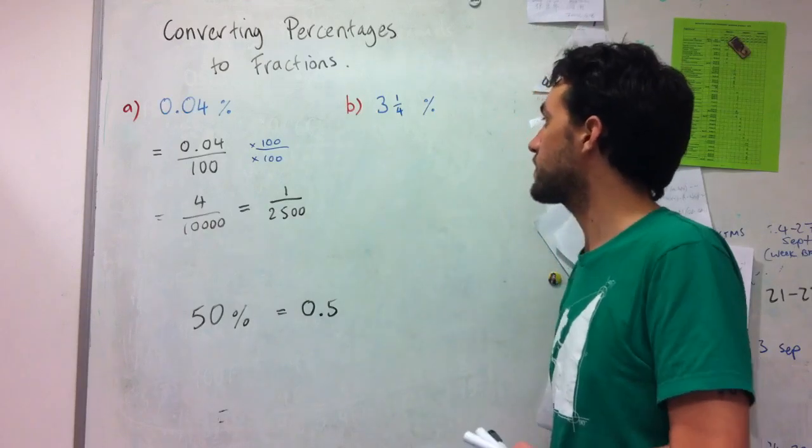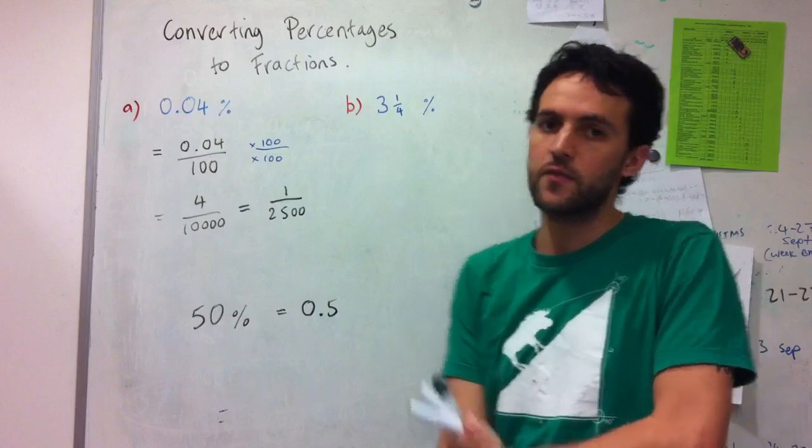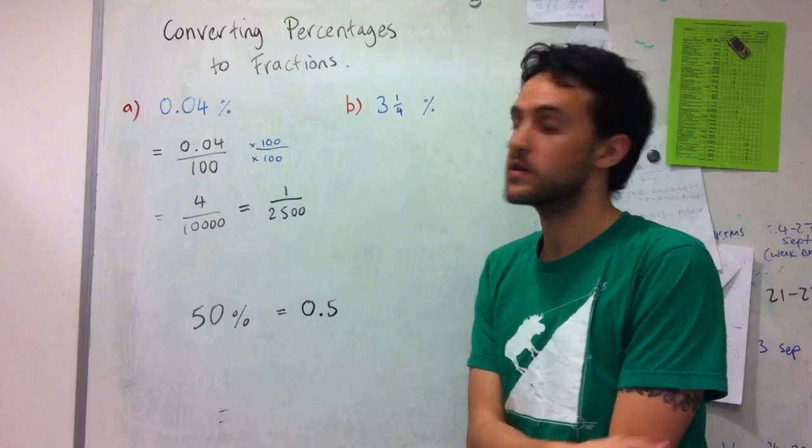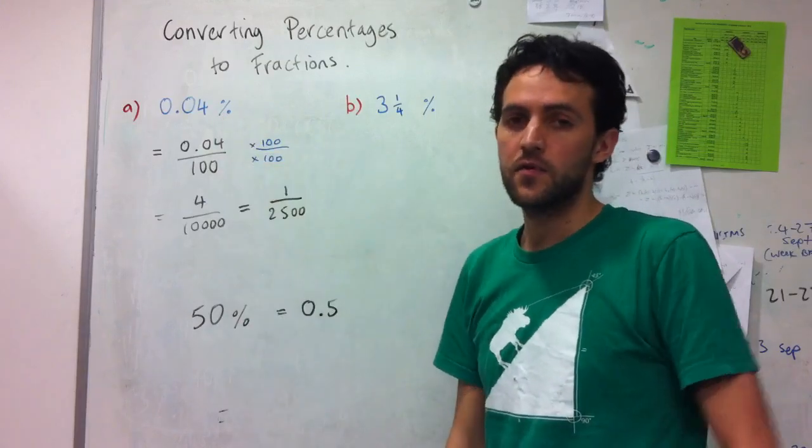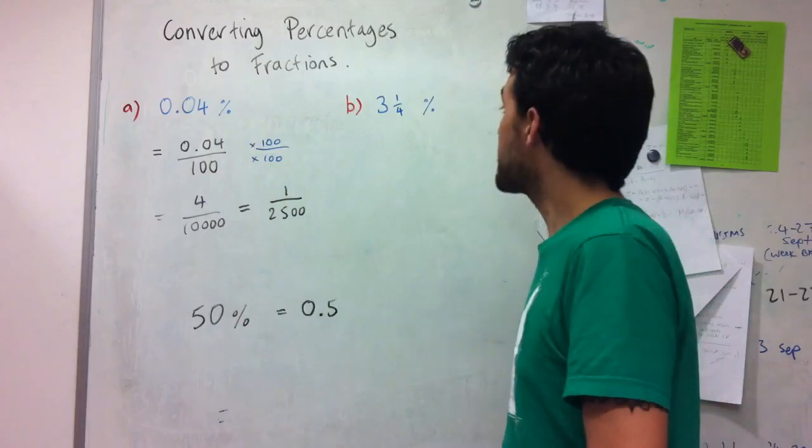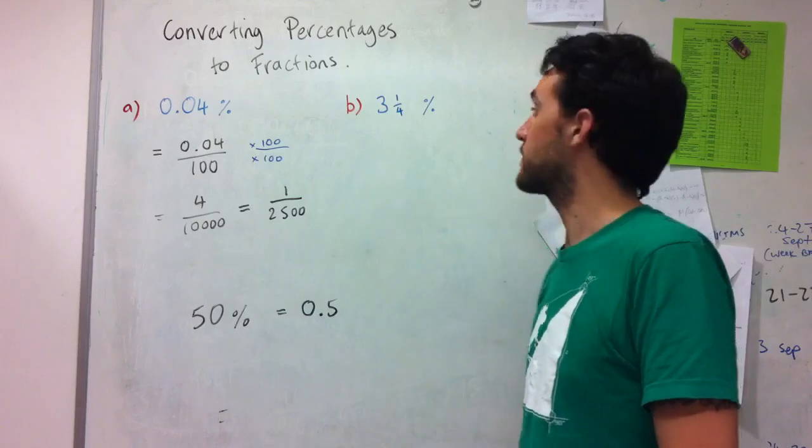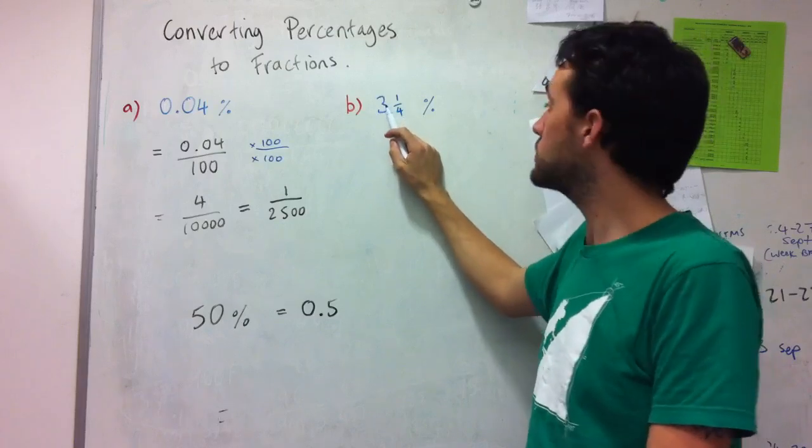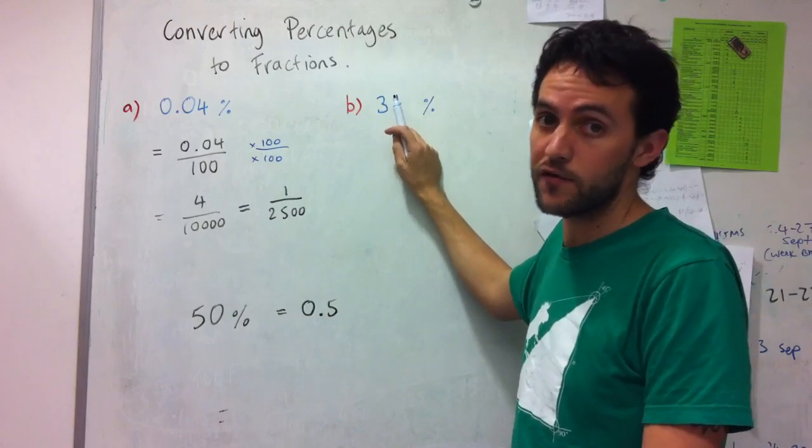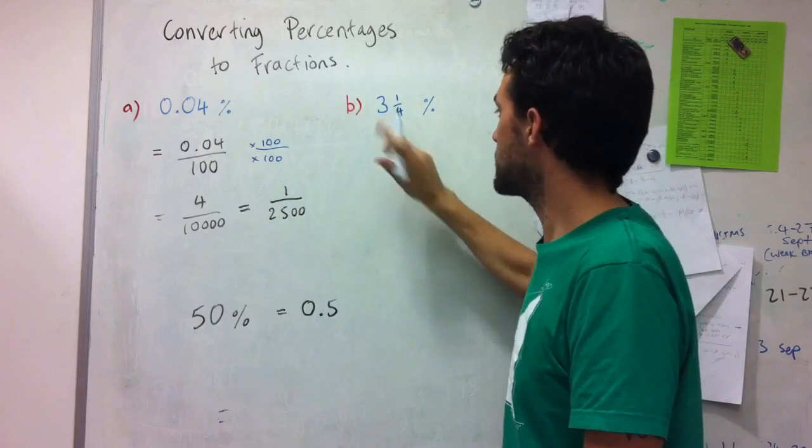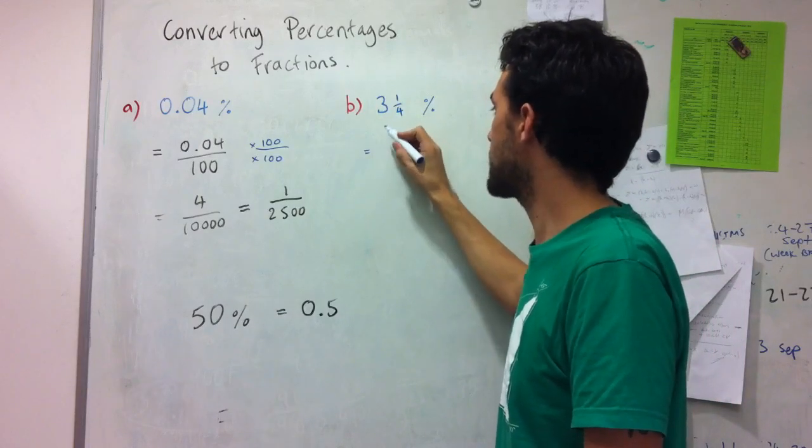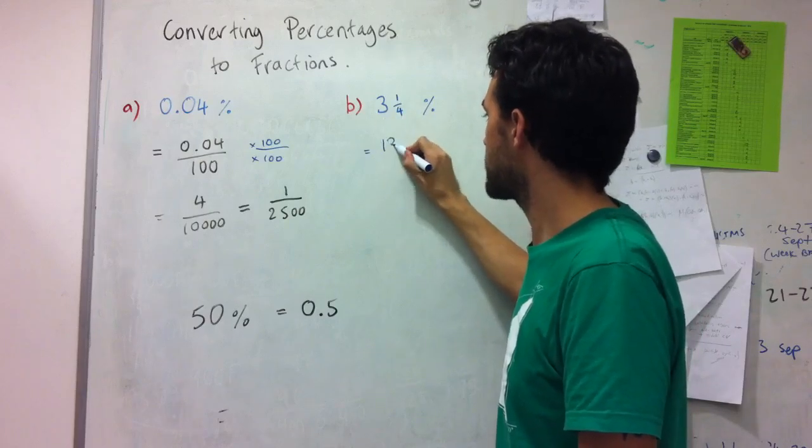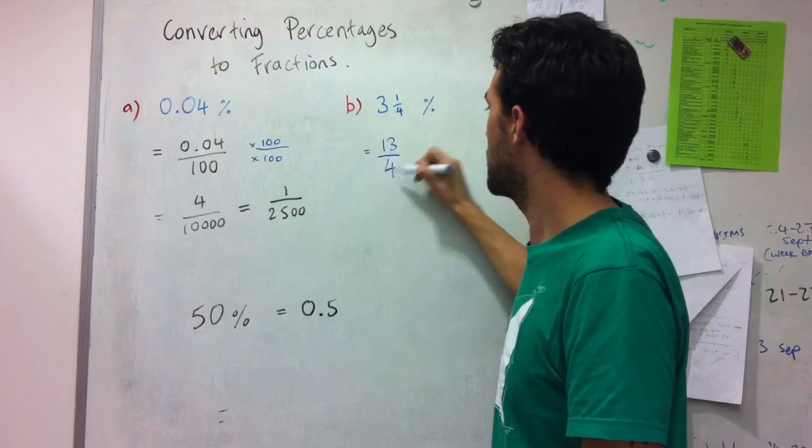For this next question, going from three and a quarter percent, there's a few different ways I can do this. I can either convert this into a decimal first and approach it the same way I do here. But what I might do instead is convert this to an improper fraction first. So I do that by saying okay, how many quarters is three wholes? That's going to be twelve quarters because three times four is twelve. So this number, firstly keeping it as a percentage, is going to be three times four plus one, so that's thirteen over four percent.